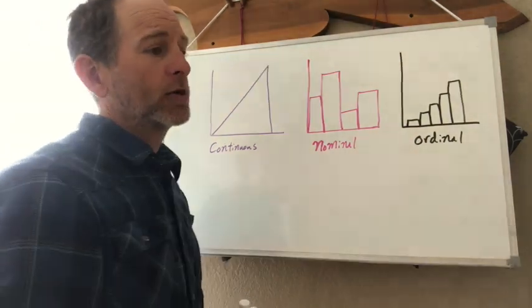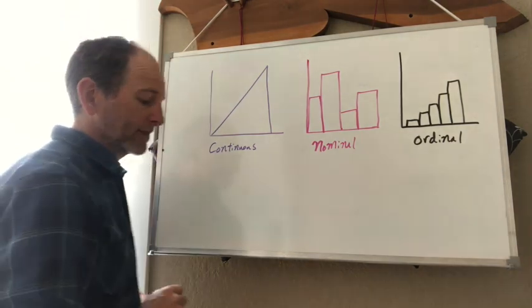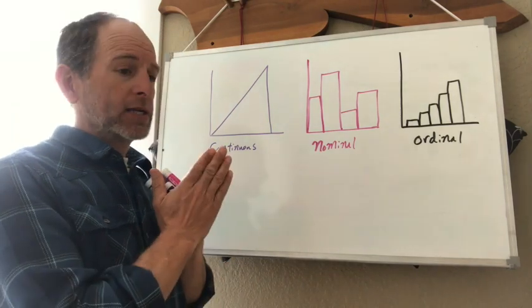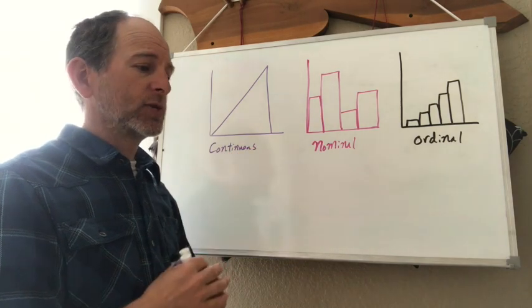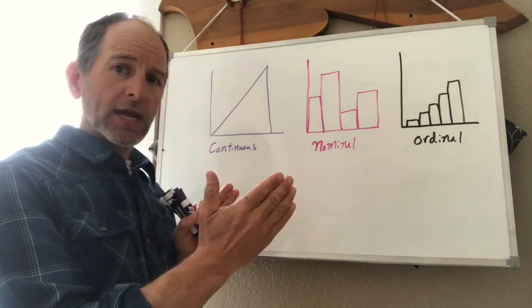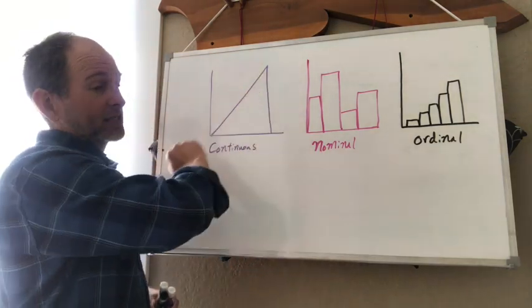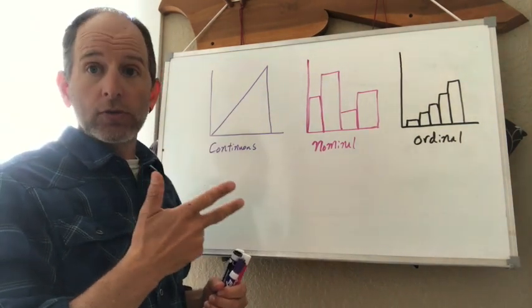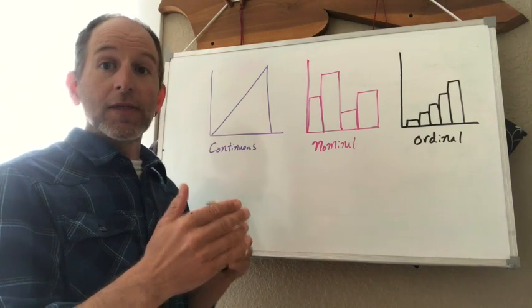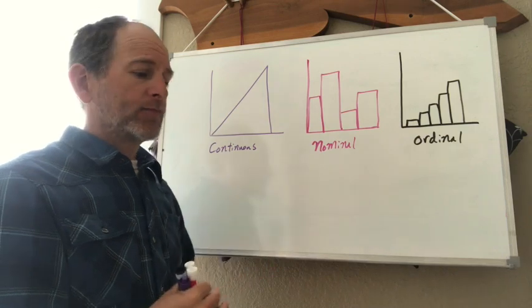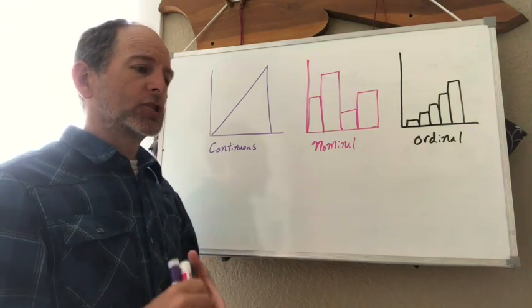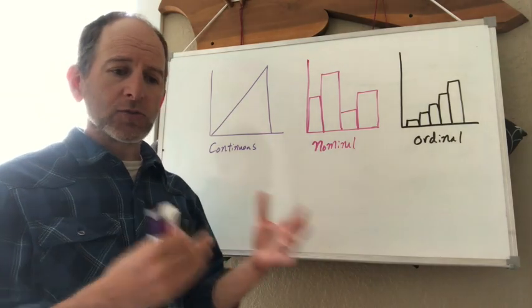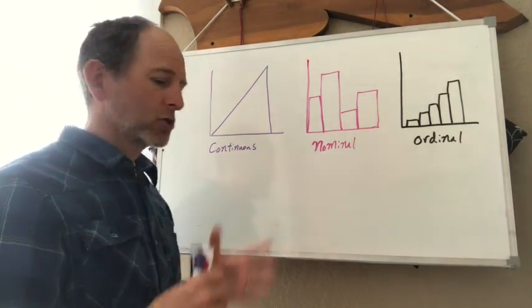And then we have ordinal data. Ordinal data are typically thought of as data that are like just raw count data or they might be ranked data, where there is a name or number assigned to each category and there's an order to those categories. But that order is not necessarily the same as a continuous measurement. So for example, low, medium, and high would be ordinal scores. But there might be a greater difference between low and medium than there is between medium and high, and that's okay. You might describe the weather and say that it is cold, moderate, or hot. There's no value associated with those, but they're ordinarily arranged. Those types of data are important.